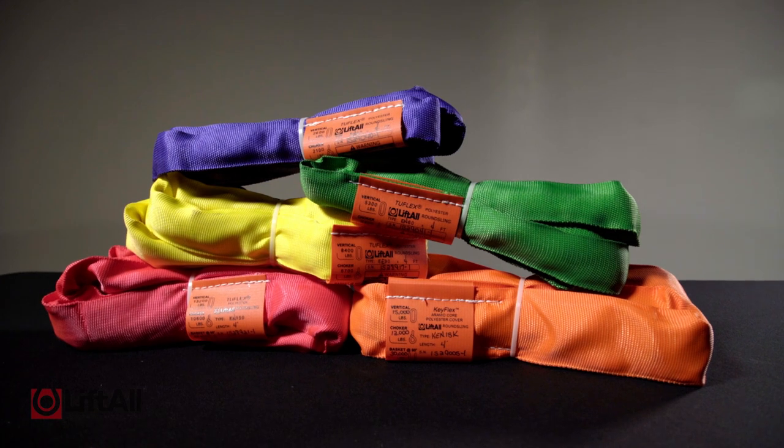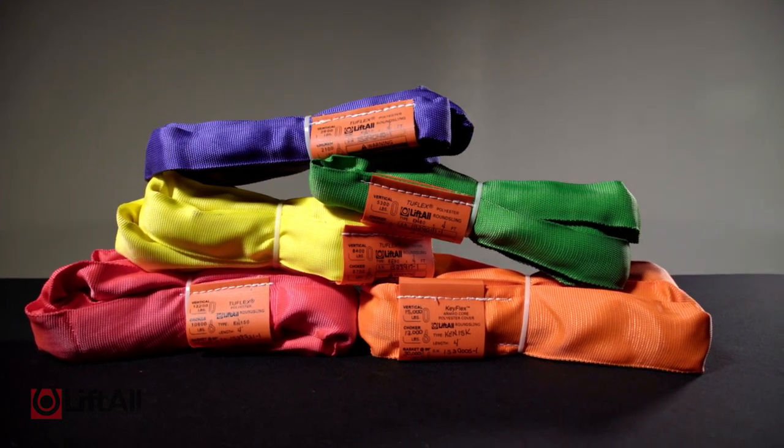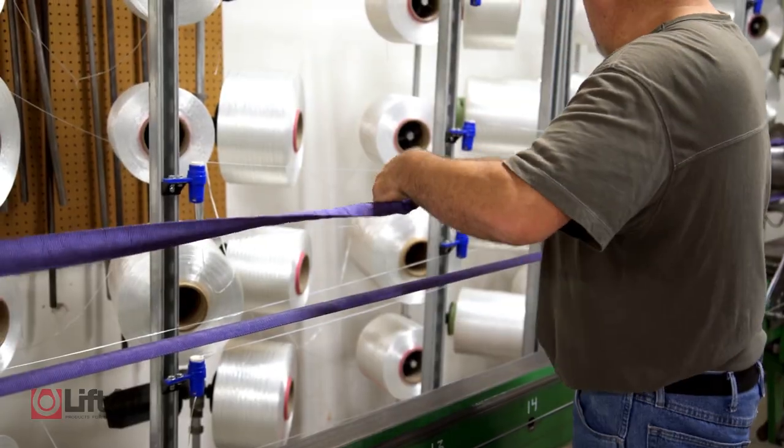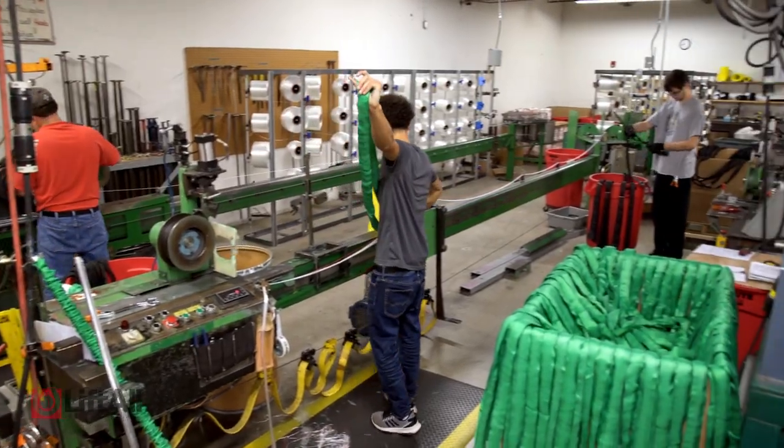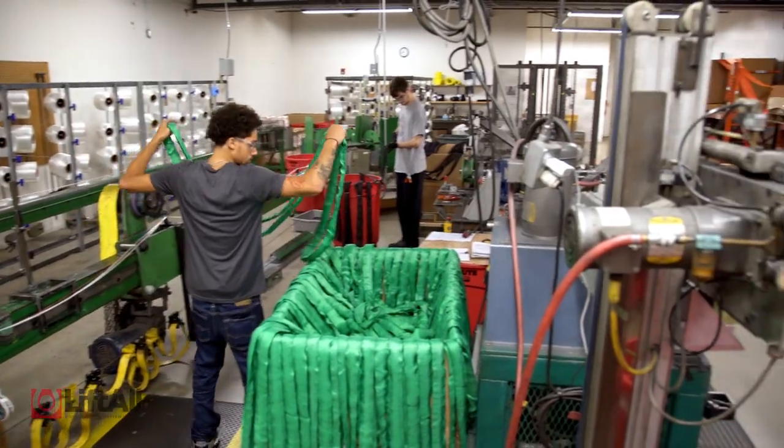Now we'll move on to our round slings. Our Tough Flex and Key Flex round slings offer several advantages over webbed slings. They're constructed from polyester and aramid yarns covered by a seamless double-walled tubular jacket. These slings promote safety through a variety of features.